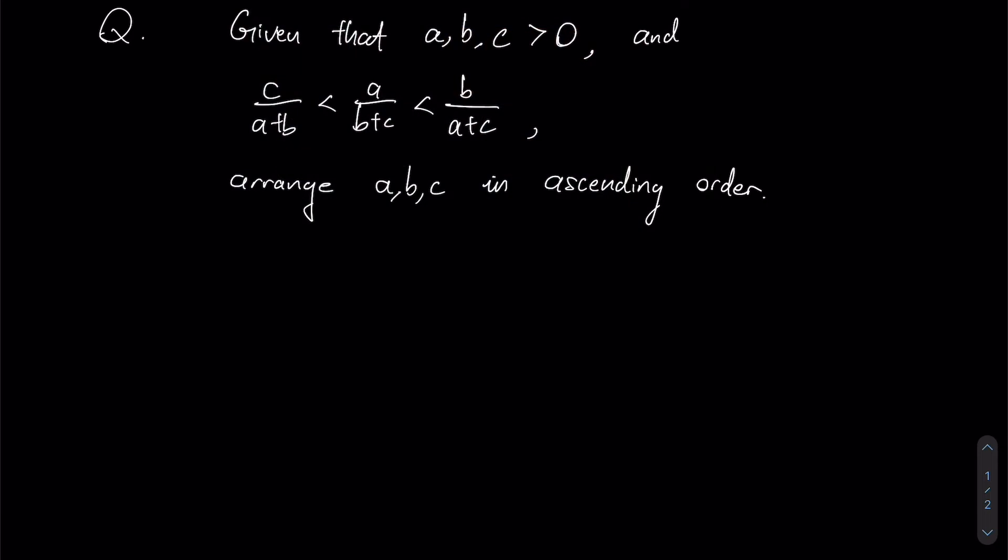Let us first take a look at the conditions. They're represented with a, b, and c are all greater than zero, so they're all positive. And we are given a relationship of these three expressions over here and we are tasked to arrange these three unknowns in an ascending order.